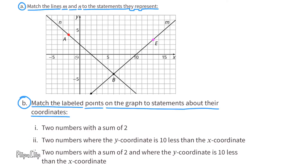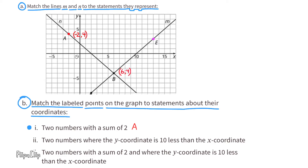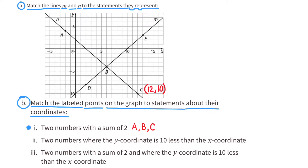Part B: Match the labeled points on the graph to statements about their coordinates. Point A has coordinates negative 2 and 4, and the sum of negative 2 and 4 is 2. The coordinates for point B are 6 and negative 4, and the sum of 6 and negative 4 is 2. Point C has coordinates 12 and negative 10, and the sum of 12 and negative 10 is also 2.